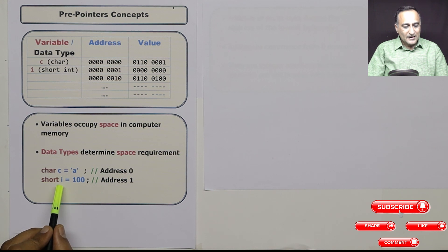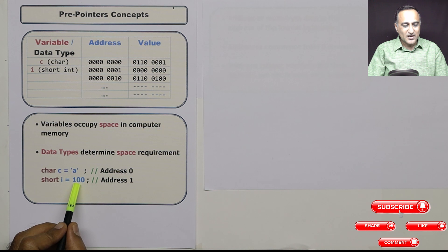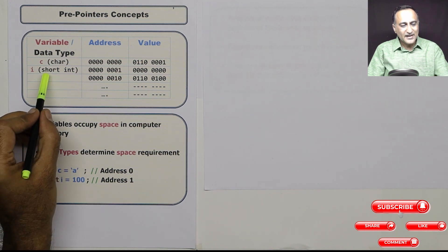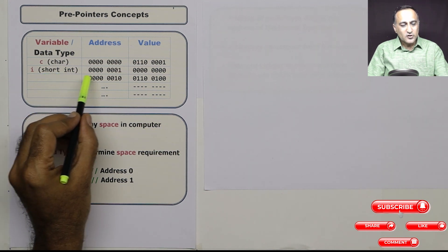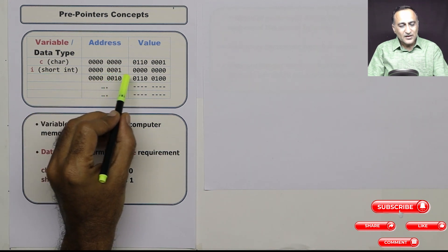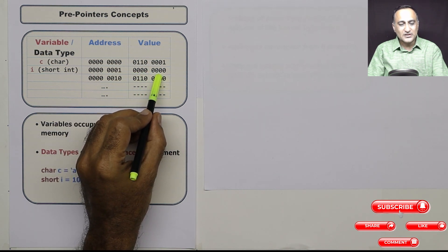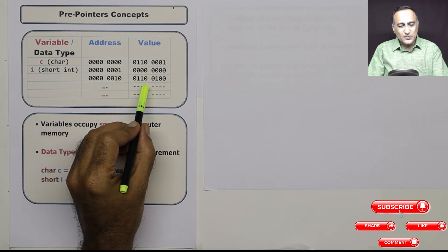Now i is a short integer type of data and its value is 100. 100 can easily be represented in one byte, but short int has two bytes. So at address one, the first byte will have all zeros.